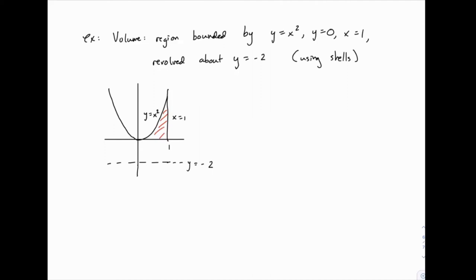We're going to use shells to find the volume of this region that's described. We take the region bounded by y equals x squared, y equals 0, and x equals 1. I've drawn that for you here, you've got the parabola y equals x squared, the vertical line x equals 1, and then the x axis y equals 0.